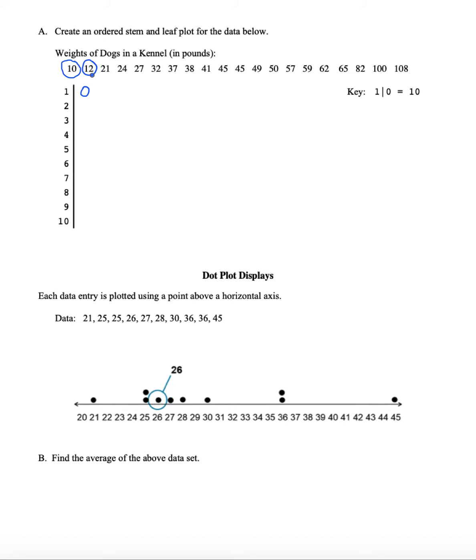Similarly, here where we have the number 12, we want the 1 to be represented by the stem, and then we take that ones place digit and we just put it right here as part of what's called a leaf. What it allows us to do is to condense our data into a smaller representation but still convey the same amount of information.